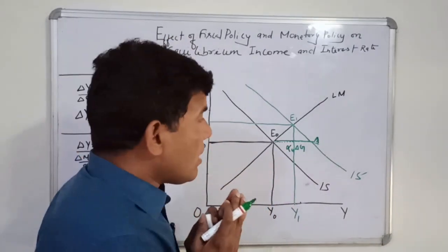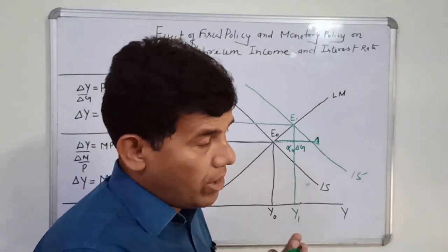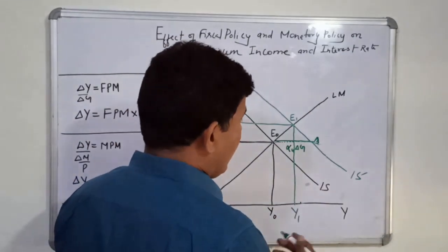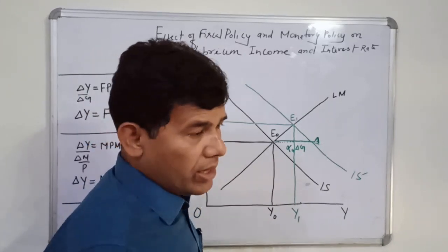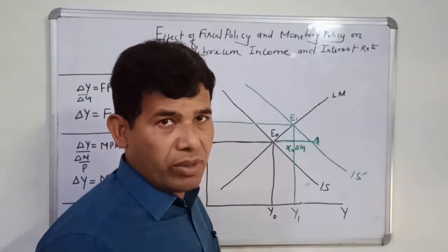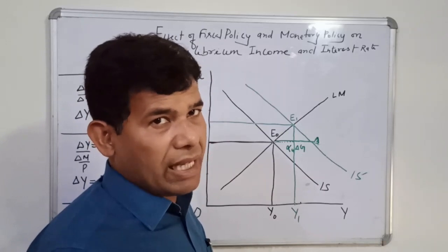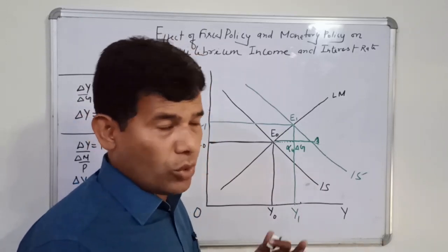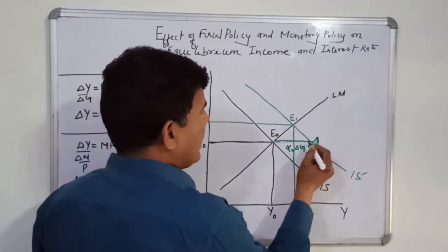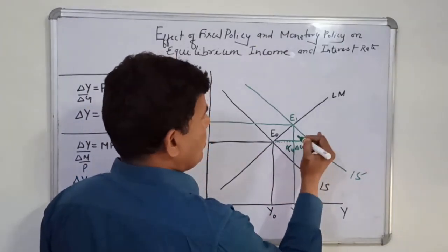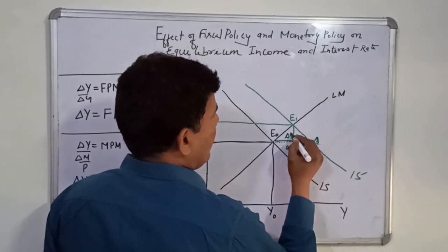You can visualize how the central bank's monetary policy has implications for output determination and employment determination in the economy. Suppose in India, RBI increases money supply. Recently, during the Corona crisis, the RBI governor adopted various measures to increase the money supply to the extent of 3.7 lakh crore rupees. Suppose if money supply rises, the LM curve will shift rightward. The extent of rise of money supply is delta M by P, and the horizontal shift of LM curve would be delta M by P divided by K.